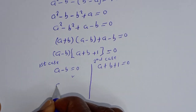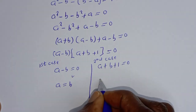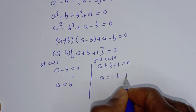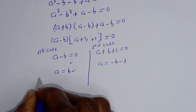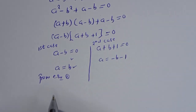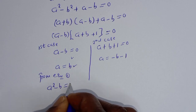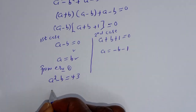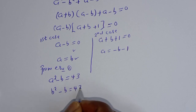From the first case, A is equal to B. From the second case, A is equal to minus B minus 1. Let's start with the first case. From equation 1, A squared minus B is equal to 43. Substituting A equals B, we get B squared minus B is equal to 43.